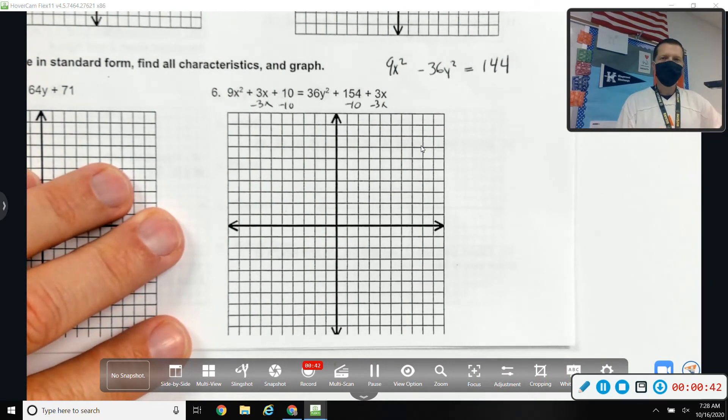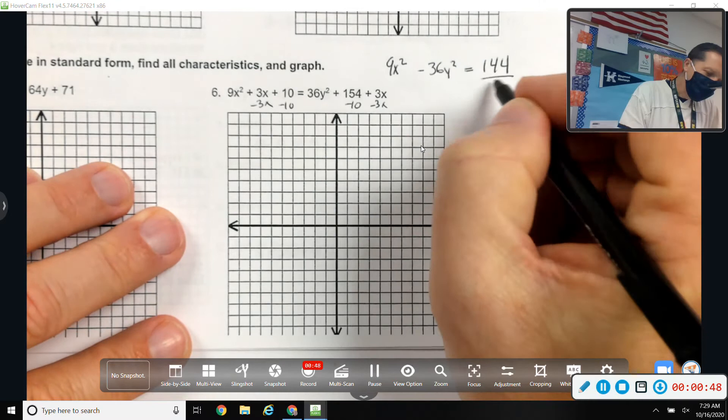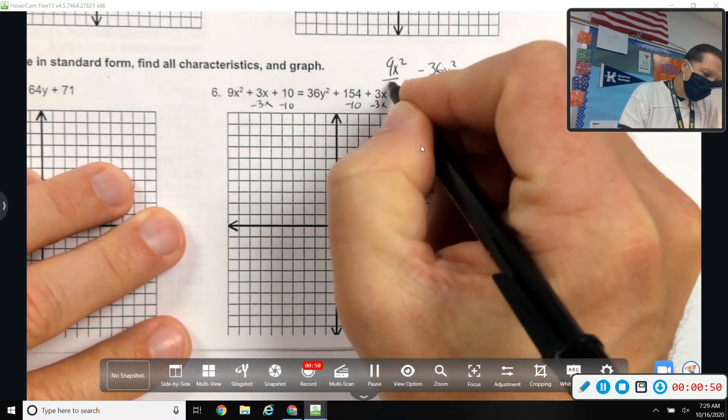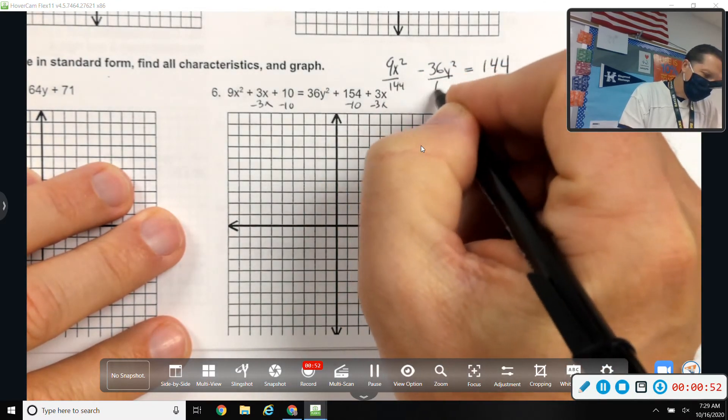So that's nice because there's no completing the square to do. I don't have to half it, square it, add it on anybody. Divide by 144.